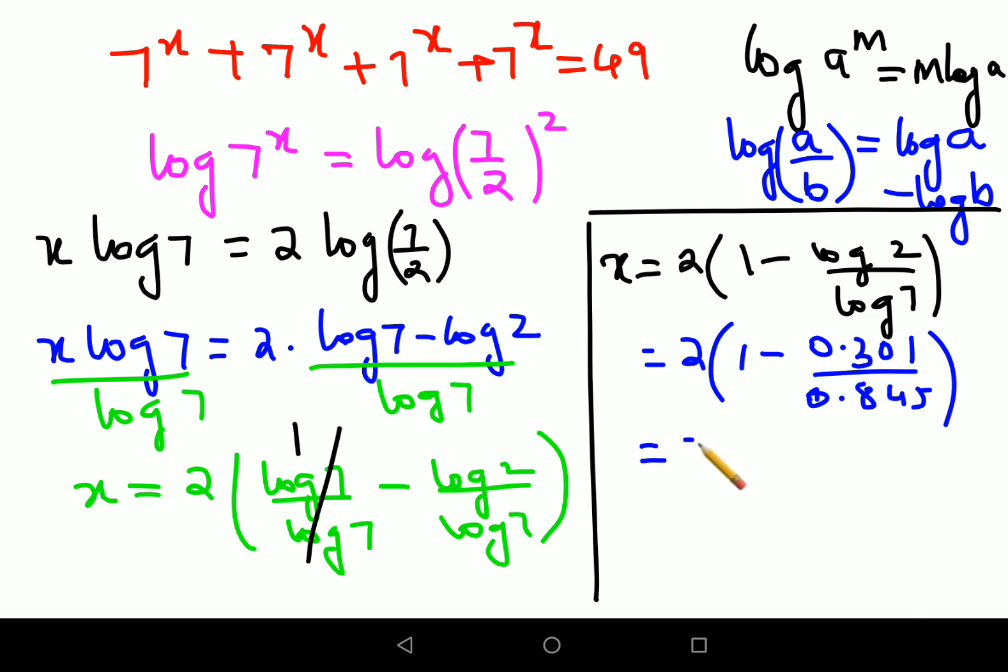When you do the division, we get 1 - 0.356, which is eventually 2 × 1.644. So the value of x is 3.288.